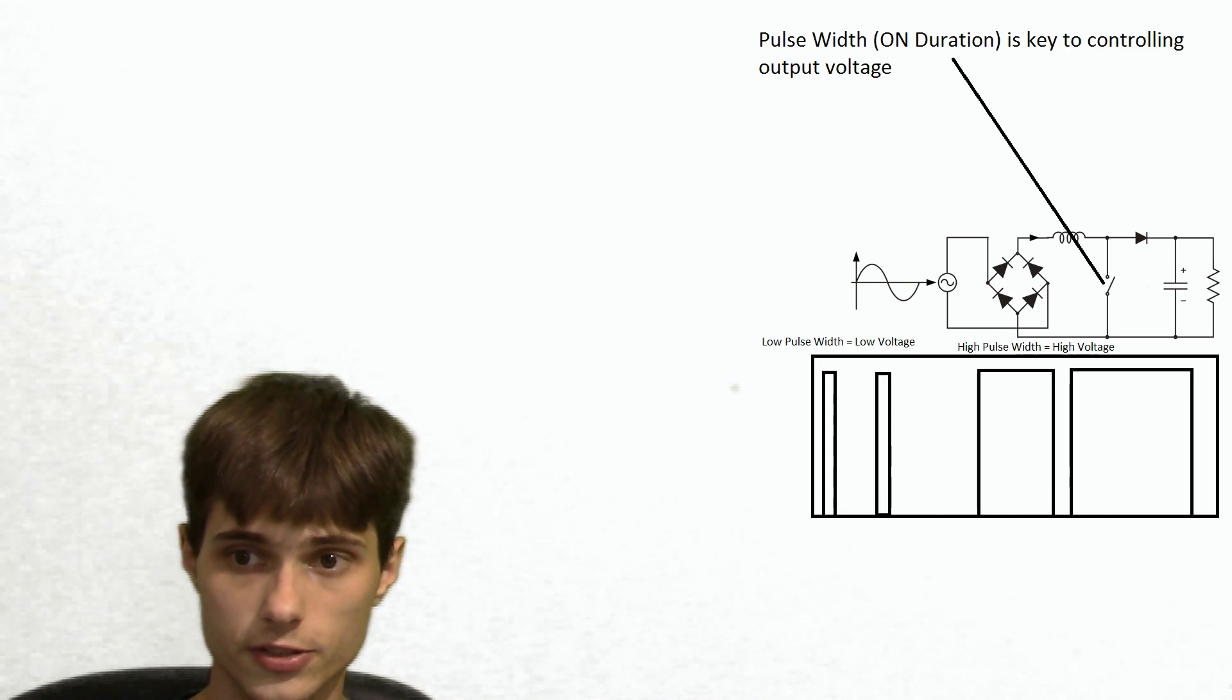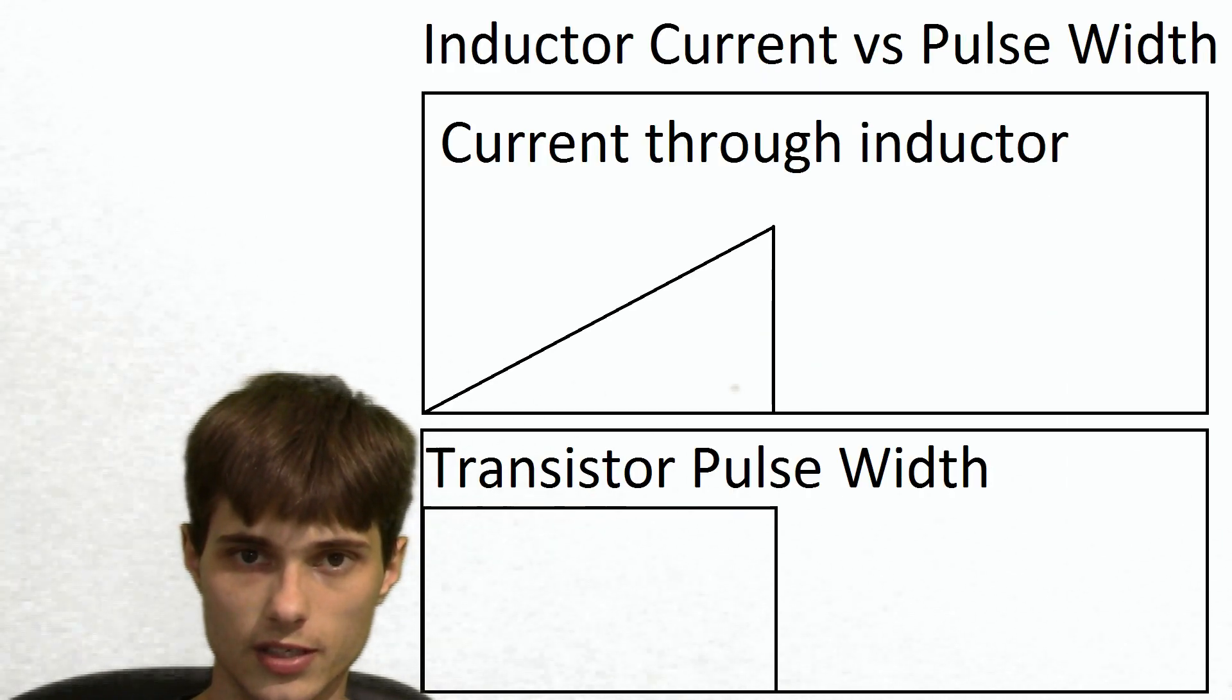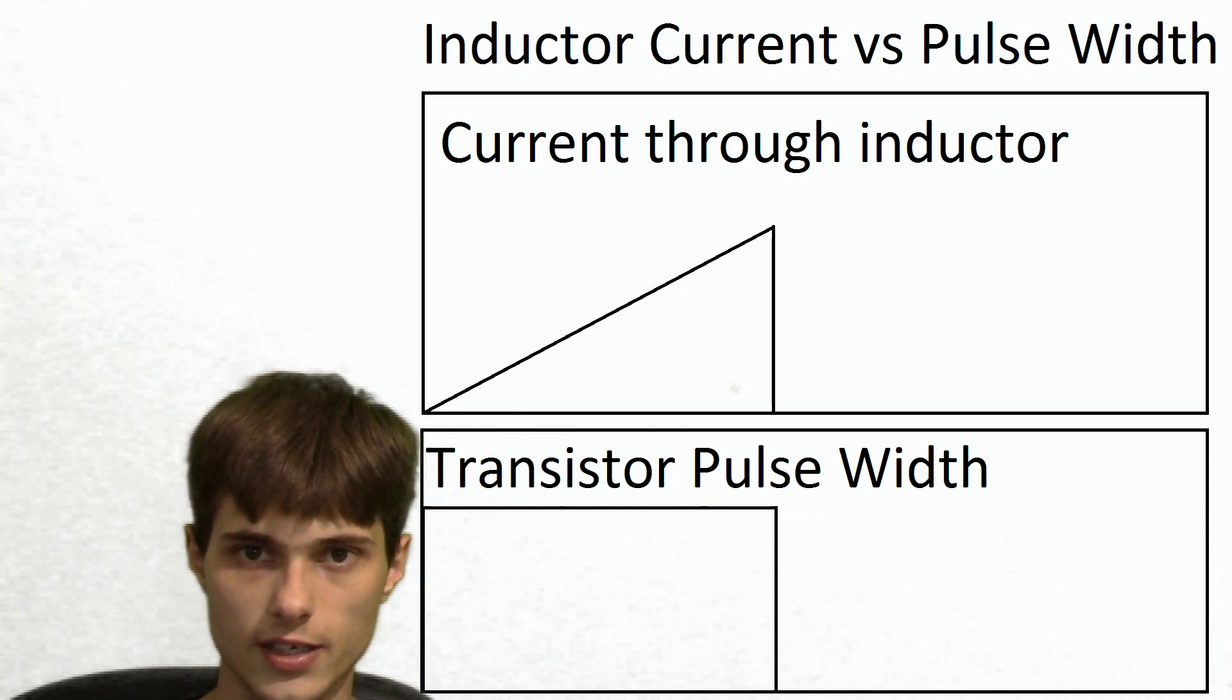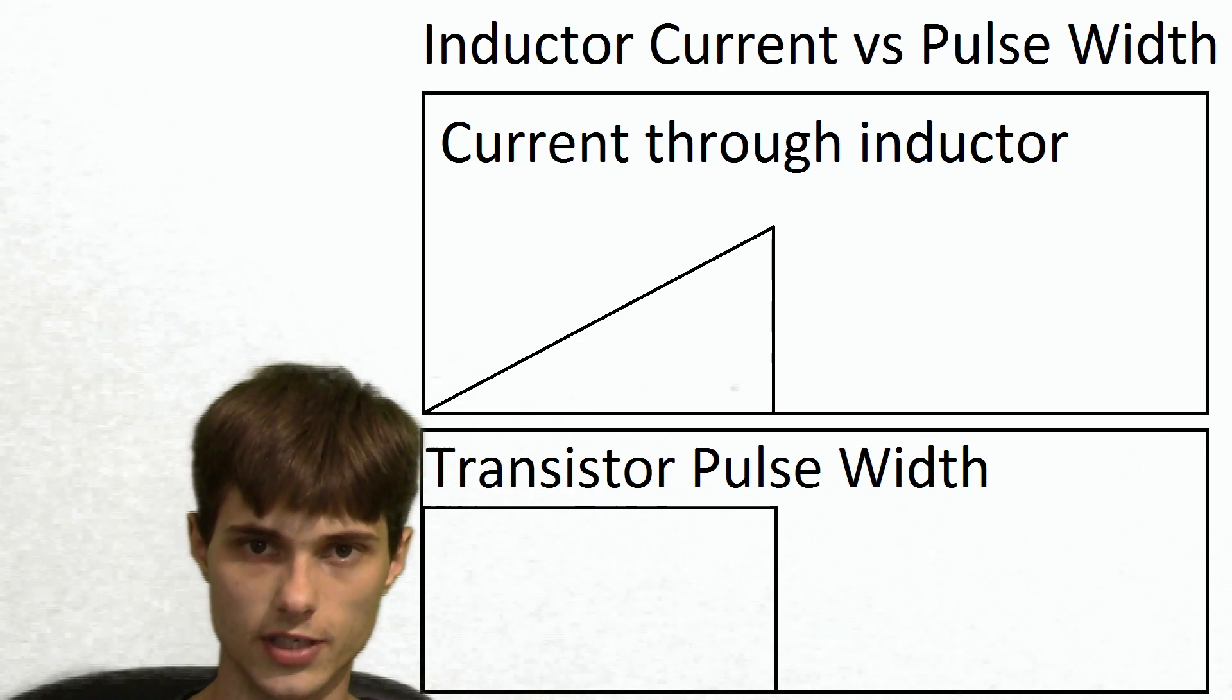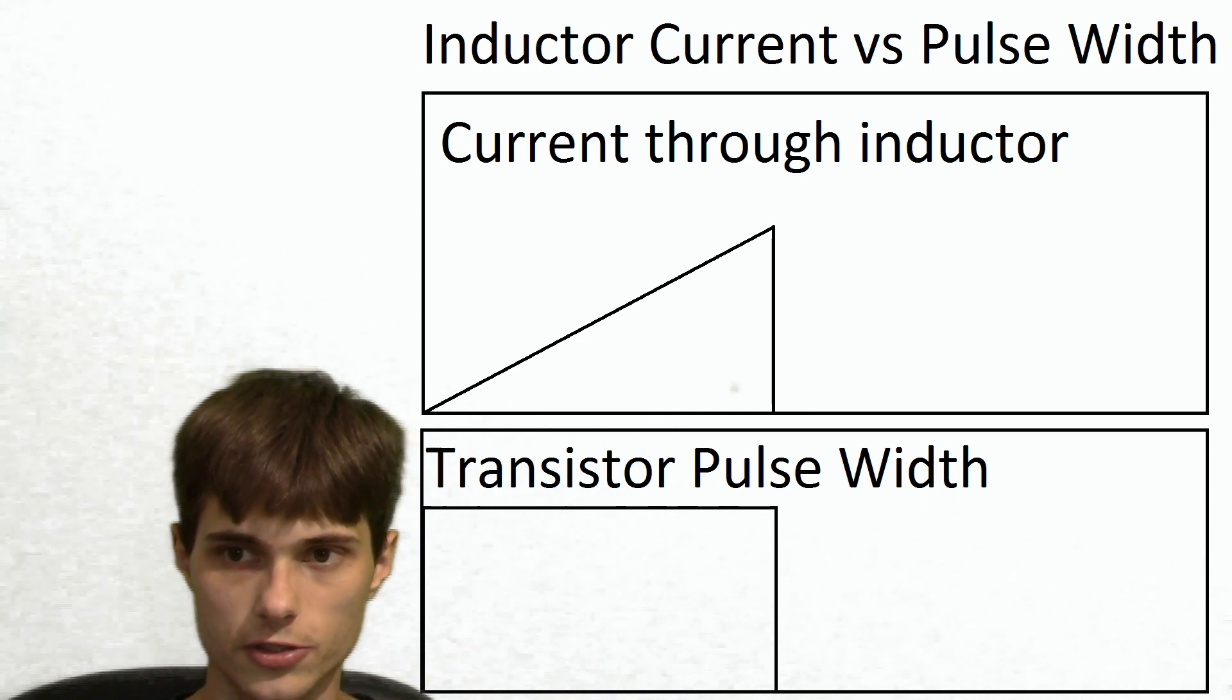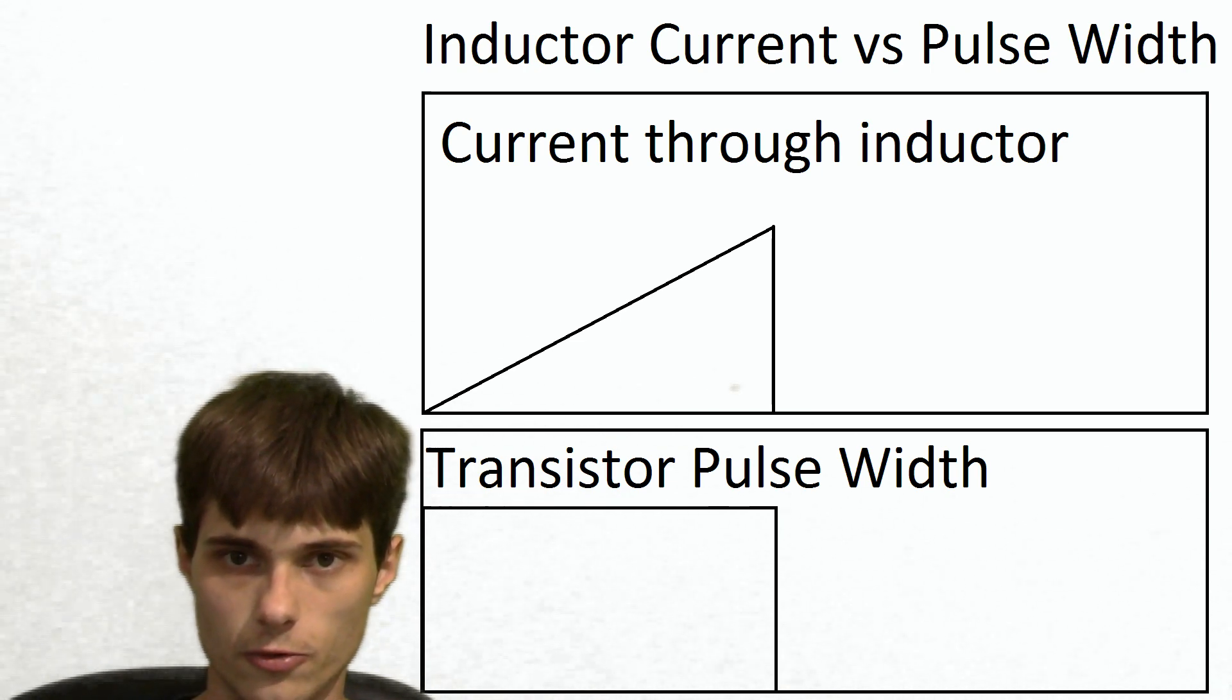So an inductor's current profile, it looks something like this. It doesn't just rise up to a peak immediately once it's connected to the power source. So once the transistor switches on, it takes some time to get the current built up. So when it first switches on, if we keep it on for not a very long time, a narrow pulse width, let's say 10% duty cycle, it builds up to this much current. Now if we turn it off there, the current doesn't build up anymore.